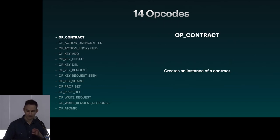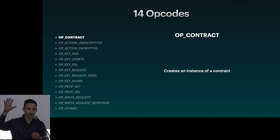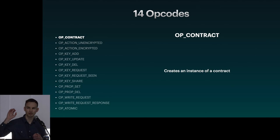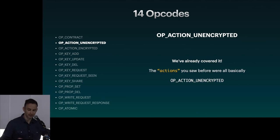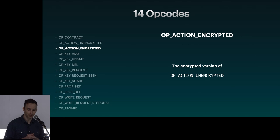These 14 opcodes give us our high-level, lightweight, end-to-end encrypted, federated virtual machine. Let's start with the first one: OPContract — this creates an instance of a contract. It's the first event you send, saying 'I'm going to create an instance of a user,' 'I'm going to create an instance of a group,' and so on. OPActionUnencrypted we've already covered — it's pretty much the exact same thing as the existing actions we covered previously. Next is OPActionEncrypted — just the encrypted version of OPActionUnencrypted.